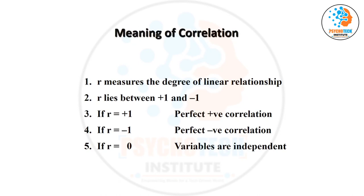Negative correlation means one value increases and the second value decreases; positive correlation means one value increases and the second value also increases. This is a very important topic. They may put a scenario and ask options, ask simply about the range, or ask what happens when the correlation is 0.